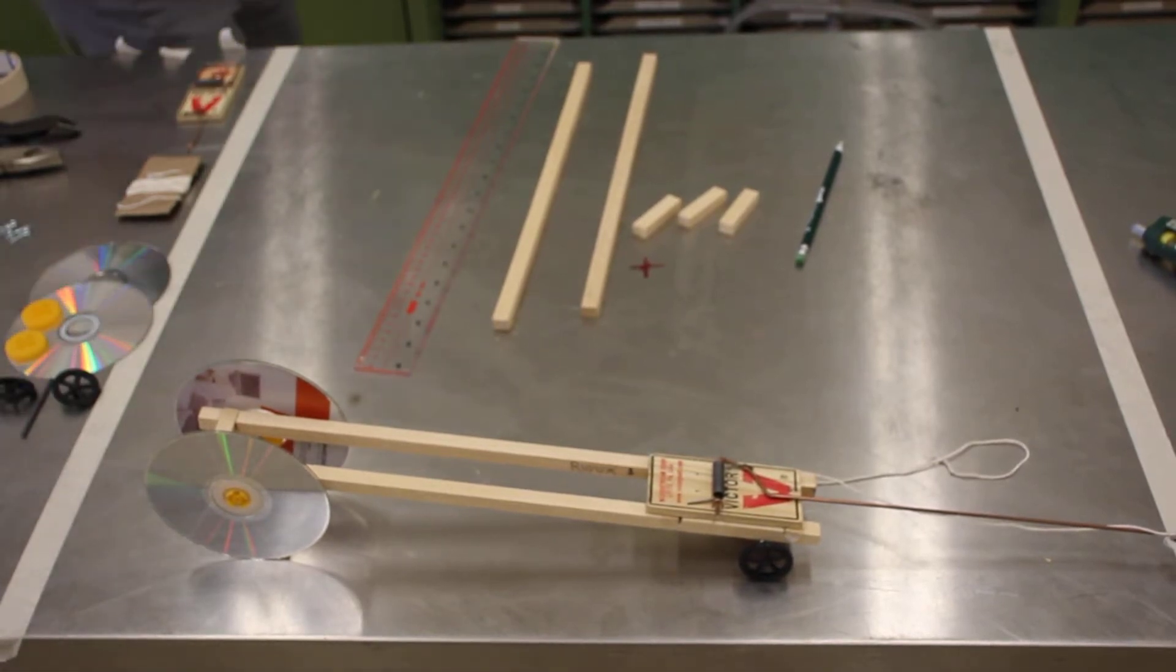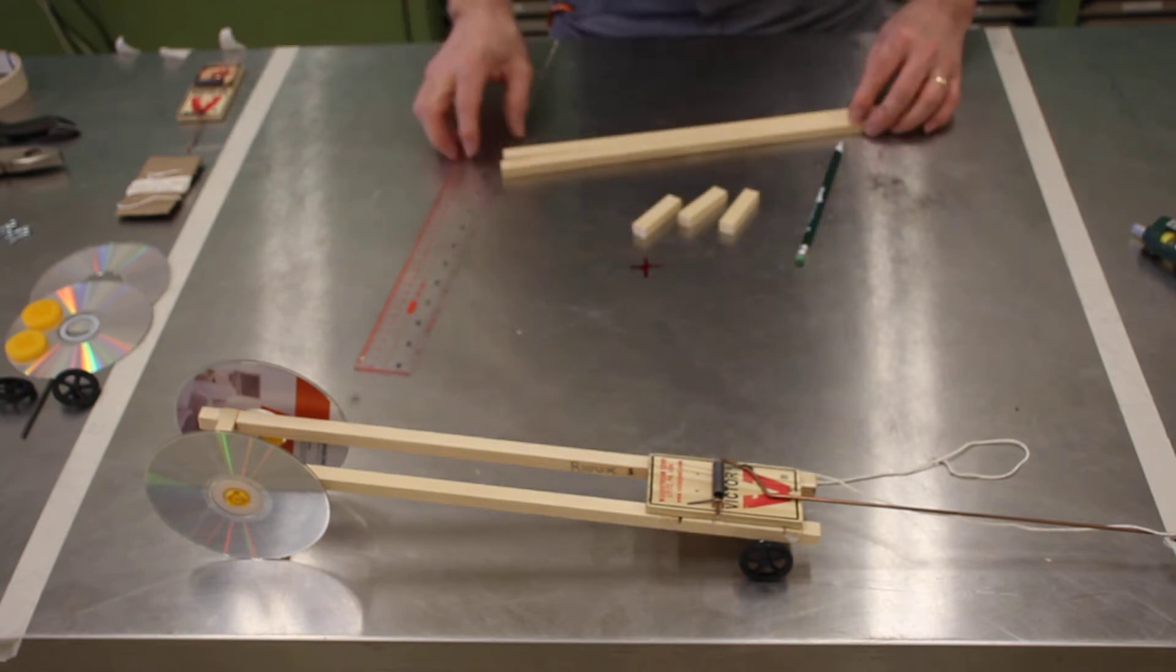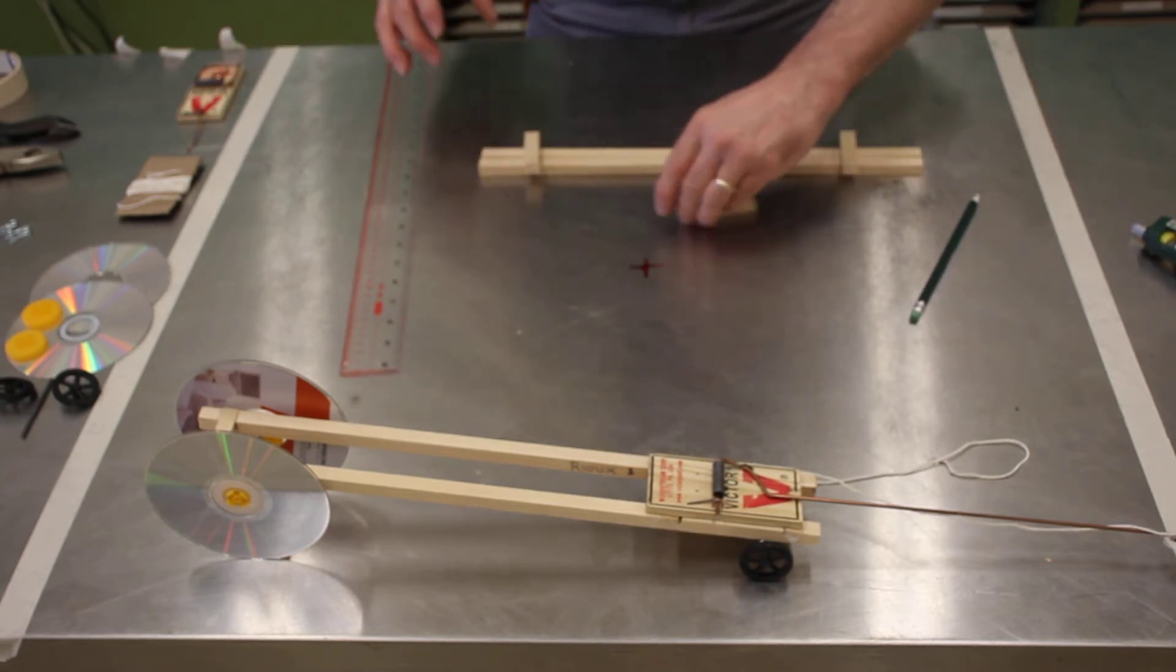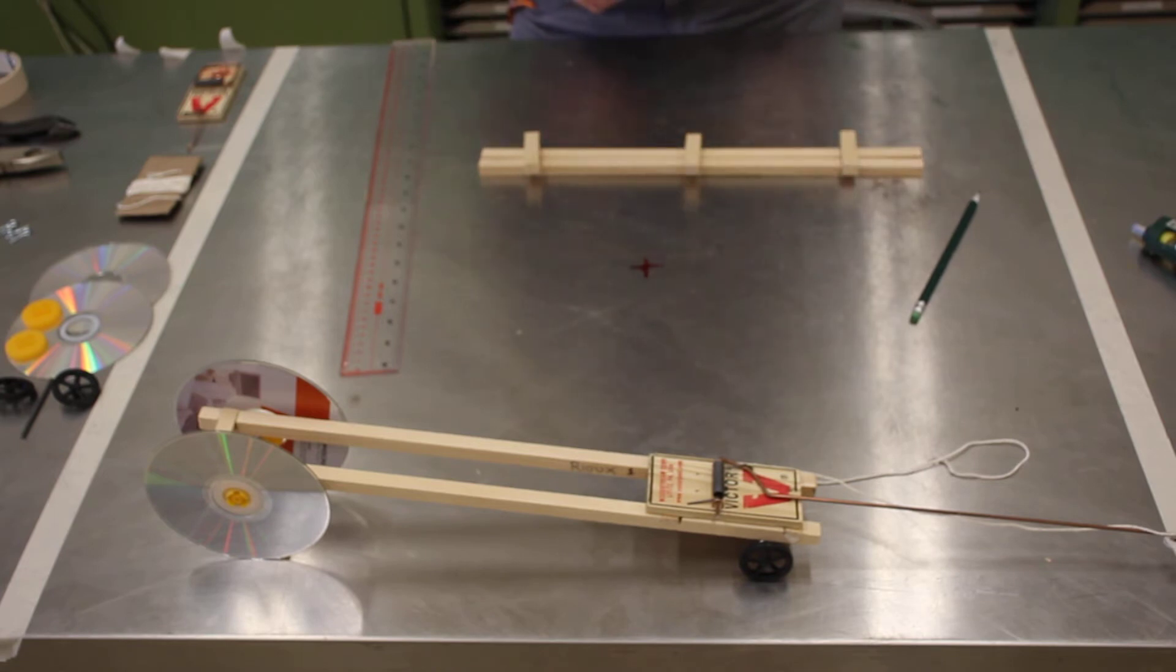For our first step, we are going to locate the areas on our frames to place our side cross members. These will keep our frame rigid, straight, and square.